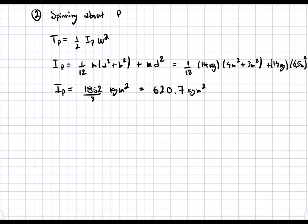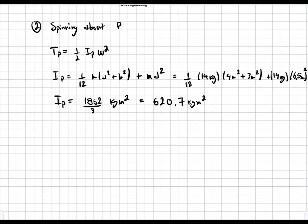Now we can again do the same thing we did before. Take this number here, which is I_P, plug it into here. We know omega, so we can actually find T_P. So T_P is going to be equal to 1 half times I_P, which is 620.7 kilograms meters squared times 5 radians per second squared. And this yields 2793 joules.